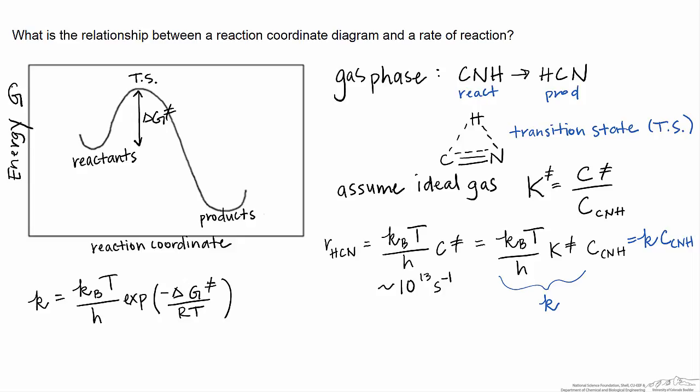We see that if we have this value, we can actually plug it straight into this exponential, and if we know the temperature, all we have to evaluate this expression are the constants, Boltzmann's constant and Planck's constant. Therefore, we can evaluate the rate constant completely from this potential energy diagram.